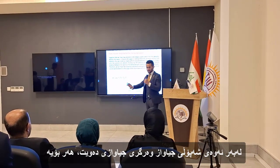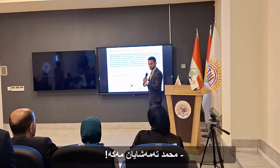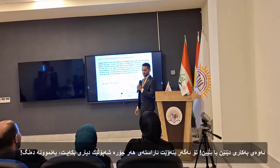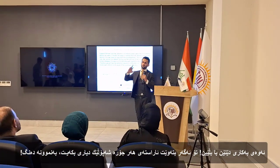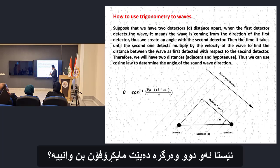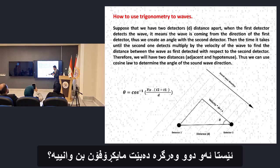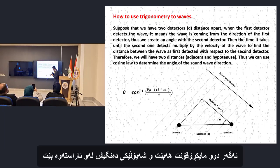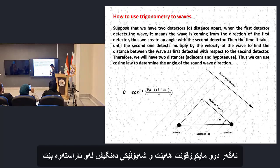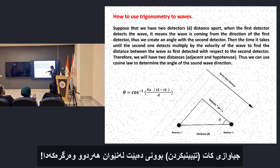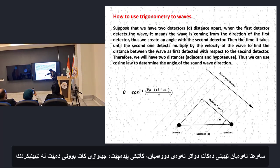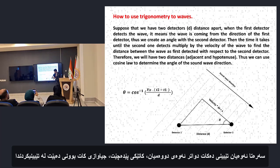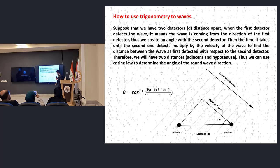Since different waves need different detectors, if you want to find the direction of any type of wave — let's say sound — these two detectors should be microphones. If you have two microphones and a sound wave comes from a certain direction, there will be a time difference between the two detectors. The first one will detect it first, and then a little bit later the second one will detect it.